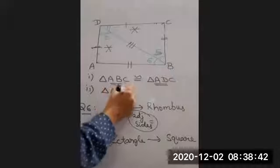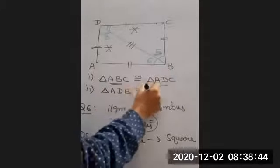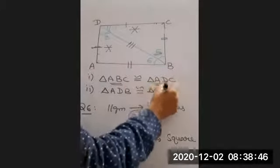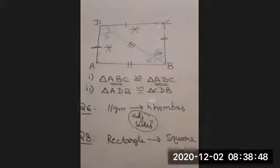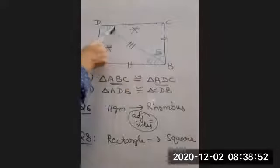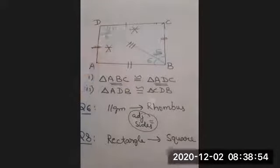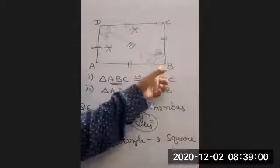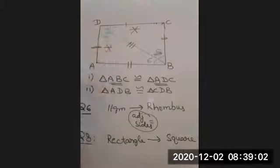So now we are getting which two triangles congruent? We are getting triangle ADB is congruent to triangle CDB. So by CPCT, angle 5 will be equal to angle 6, angle 7 will be equal to angle 8. So that shows that BD is bisecting angle B as well as angle D.